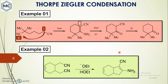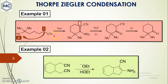Let us see more examples of Thorpe-Ziegler condensation. In this example you can see a dinitrile — one nitrile here and another one here. The alpha carbon of one nitrile is added to the carbon of the other CN bond, and a cyclic bond is formed. The CN bond usually becomes a double bond in this cyclic product.